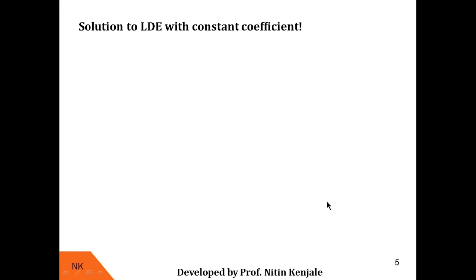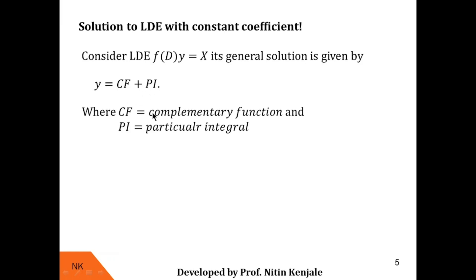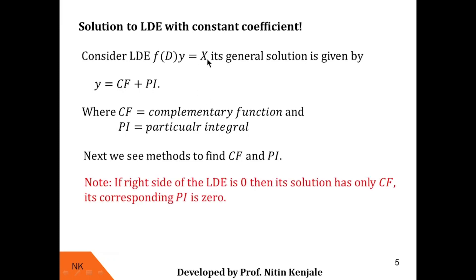Now let's talk about the solution to LDE with constant coefficients. For f(D)·y = X, the general or complete solution is y = CF + PI, where CF is the complementary function and PI is the particular integral. So the complete solution has two parts. In this video we will focus only on finding the complementary function. Note that if the RHS is 0, then PI is also 0, so the solution will have only the complementary function.